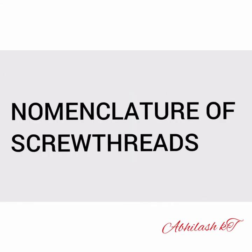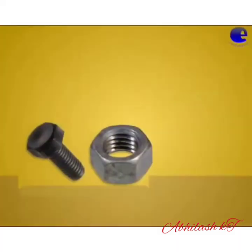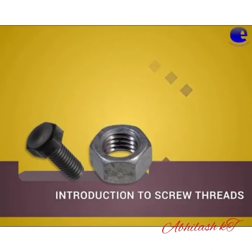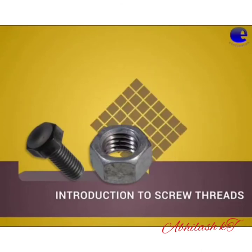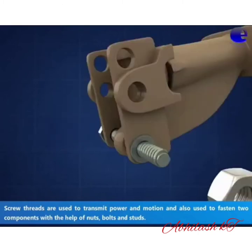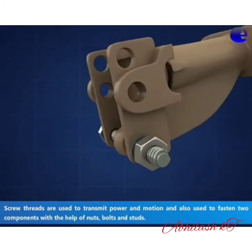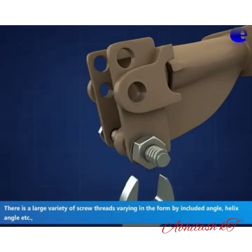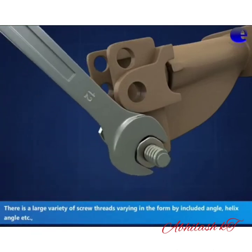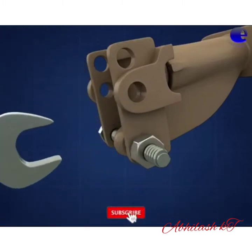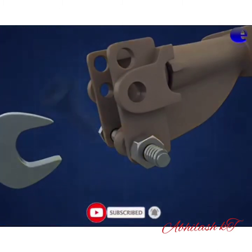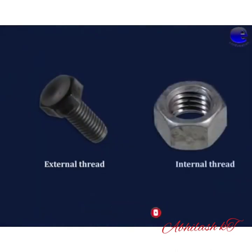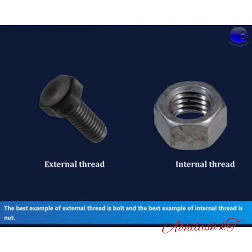Let us see the nomenclature of screw threads. Screw threads are used to transmit power and motion, and also used to fasten two components with the help of nuts, bolts and studs. Screw threads are mainly classified into two: external threads and internal threads. An example of external thread is a bolt, and internal thread is a nut.